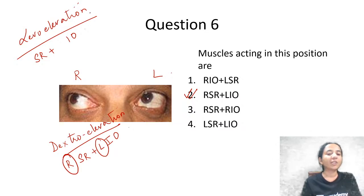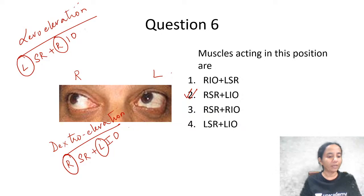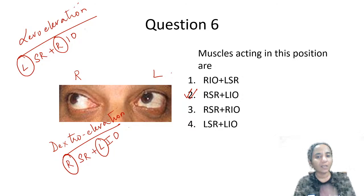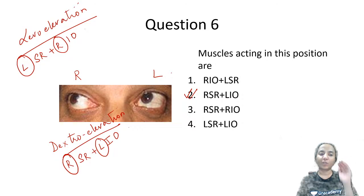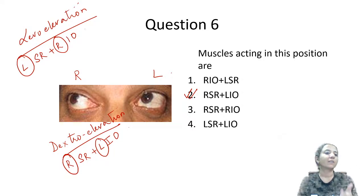The same logic applies to levo elevation — it is a left-sided movement, so the left superior rectus and right inferior oblique. And the same can be applied for dextro depression and levo depression as well. This is a simple way of arriving at the answer in an exam without getting into too much theory.